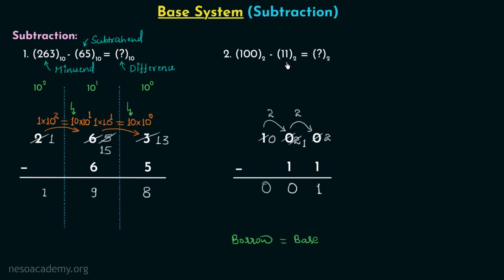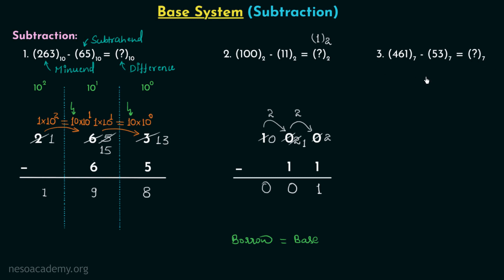So when we subtract 11 in binary from 100 in binary, we get 1 in binary. Now moving on to the third question: we want to subtract 53 (base 7) from 461 (base 7) and note down the result in base 7 — this is subtraction in the septal number system. Here 461 is the minuend and 53 is the subtrahend. This subtraction is a homework problem for you.